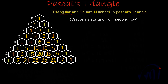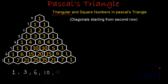Let me find the triangular numbers in this Pascal's Triangle. The triangular numbers, as discussed in earlier videos: the first triangular number was 1, the second was 3, the third was 3 plus 3 which is 6, then 6 plus 4 which is 10 — the fourth triangular number. Then we had 15, then 15 plus 6 is 21, then 21 plus 7 is 28, and so the series continues.